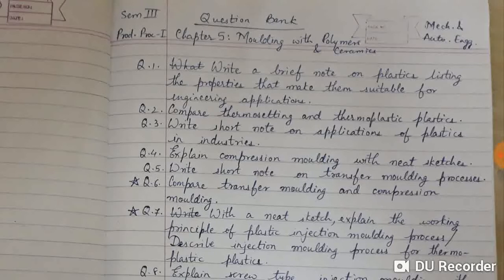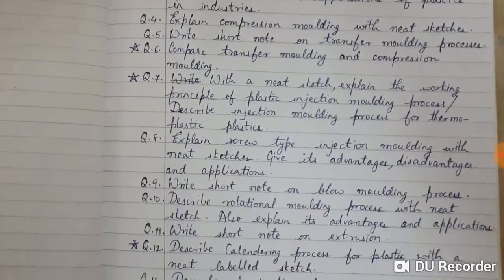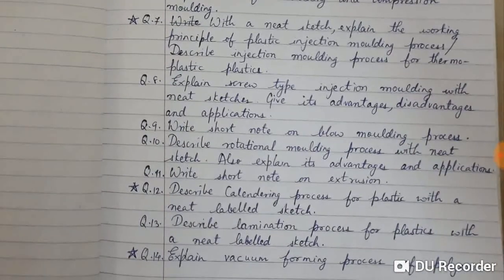Question 7 was also asked in December 2017. After preparing this question bank, I reviewed it with the December 2017 paper. Question number 8: Explain screw type injection molding with neat sketch; give its advantages, disadvantages, and applications. Question number 9: Write a short note on blow molding process. Question number 10: Describe rotational molding process with neat sketch; also explain its advantages and applications.